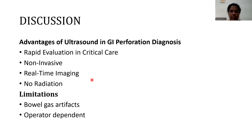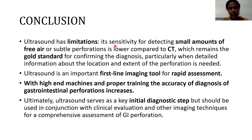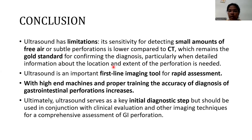The advantages of ultrasound in GI perforation diagnosis include rapid evaluation in critical care, non-invasive approach, real-time imaging, and no radiation. However, it has limitations due to bowel gas artifacts and operator dependence. With experience, a radiologist can detect perforation on ultrasound. Sensitivity for detecting small amounts of free air or subtle perforations is lower compared to CT, which remains the gold standard, particularly when detailed information about location and extent of perforation is needed. Ultrasound is an important first-line imaging tool in emergency situations because of its wider availability and low cost. With high-end machines and proper training, the accuracy of diagnosing gastrointestinal perforations increases.